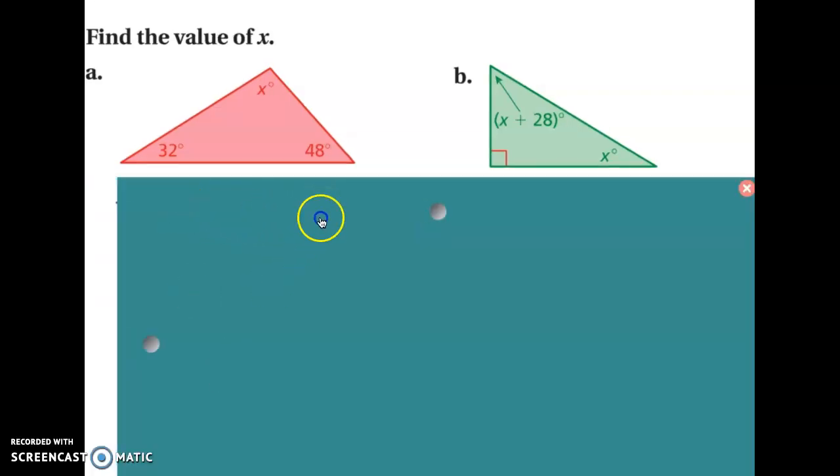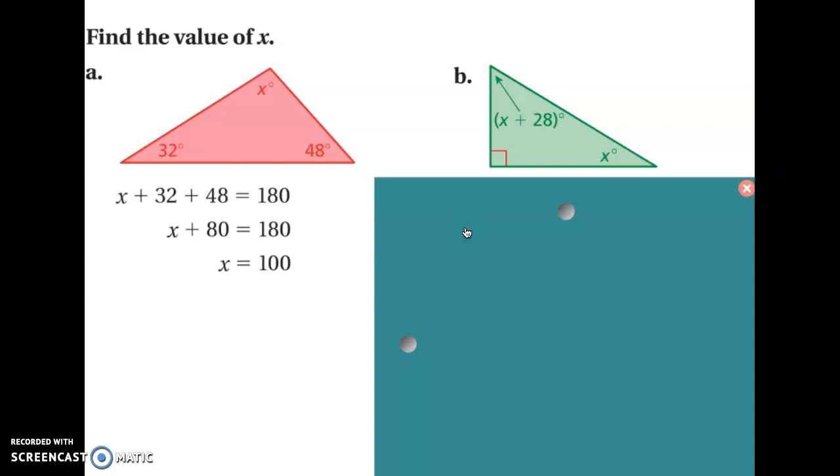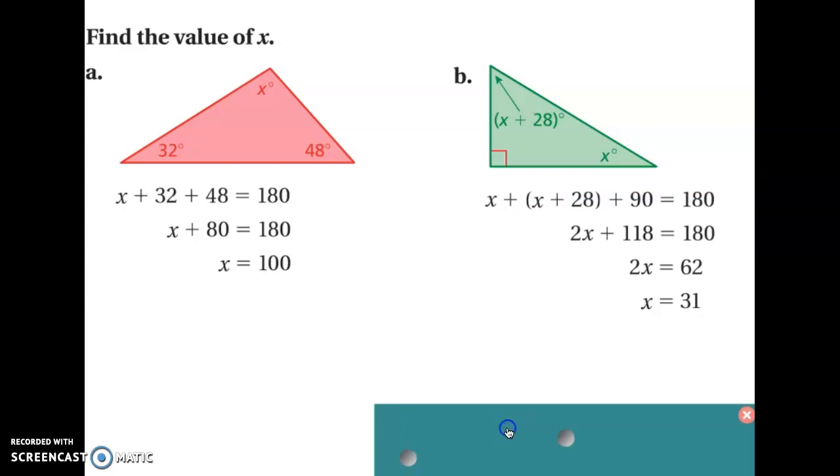So, let's go through this. Here, we set up our equation. We solved. These two values equal to 80. We subtracted 80 from each side. X is 100 degrees. Here, same thing. X plus the quantity of X plus 28. And now, this 90 appears because this is a right angle. This is also known as a right triangle. No, there is no wrong triangle or wrong angle. So, X here is equal to 31.